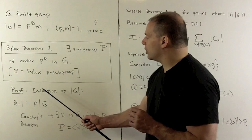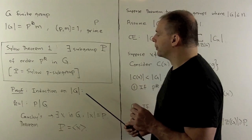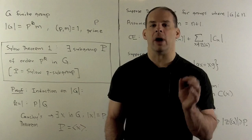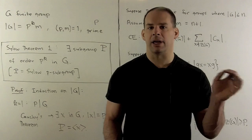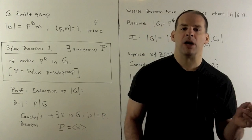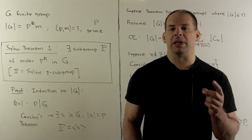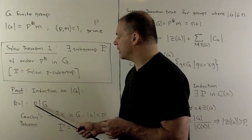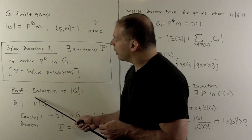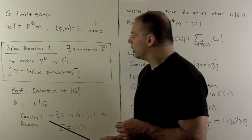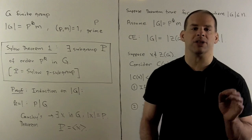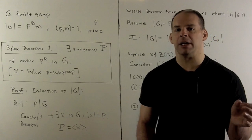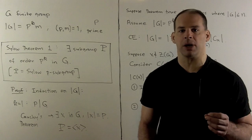We're going to use induction on the order of the group. For our base case, we might as well start with the case where p divides the order of the group, so we can pull out Cauchy's theorem. So p is dividing with just exponent one. Cauchy's theorem says we have an element x in the group whose order is equal to p. That's going to generate a subgroup isomorphic to Z mod p, and that'll be our Sylow p-subgroup in this case.